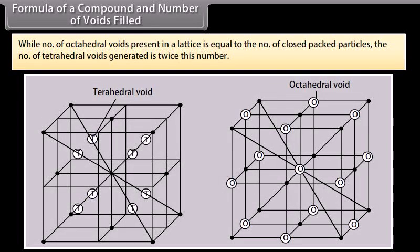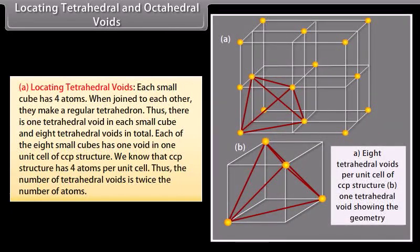Formula of a compound and number of voids filled: the number of octahedral voids in a lattice equals the number of close-packed particles, while the number of tetrahedral voids generated is twice this number. Locating tetrahedral voids: each small cube has 4 atoms; when joined to each other they make a regular tetrahedron. There is one tetrahedral void in each small cube and 8 tetrahedral voids in total in the CCP unit cell, which has 4 atoms per unit cell — so the number of tetrahedral voids is twice the number of atoms.